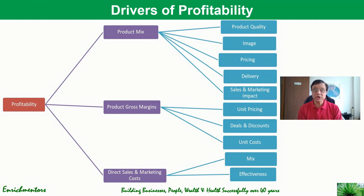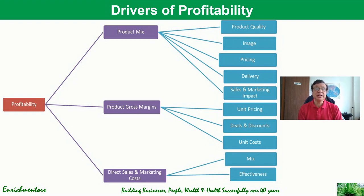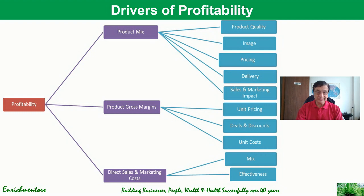Some of these drivers may be under your control and some may not. Product mix depends on product quality — products with better quality than competitors will sell more — as well as image, pricing, delivery, and sales and marketing impact. Product gross margins depend on factory cost, unit pricing, and the deals and discounts you give in the field. Sales and marketing cost depends on mix and effectiveness.